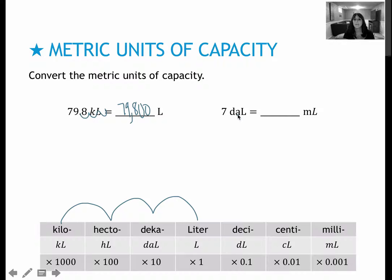And from decaliters to milliliters, so deca is here. 1, 2, 3, 4 to get to milliliters. So 1, 2, 3, 4 gives me four zeros. So 70,000 milliliters.